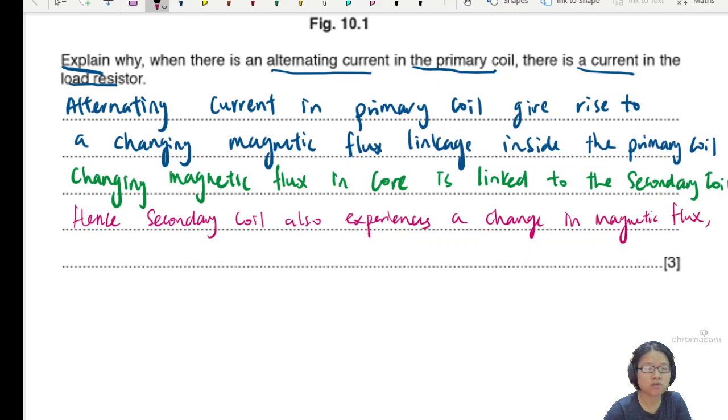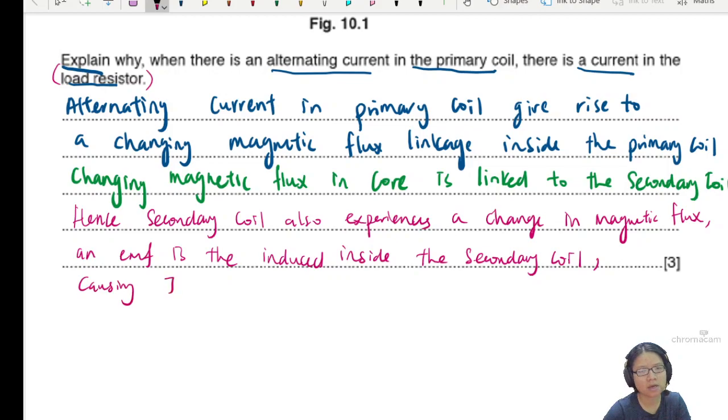So from Faraday an EMF is then induced inside the secondary coil. We need to go back to the question. Why is there a current in the load resistor? Causing current to flow in the resistor. Good enough.